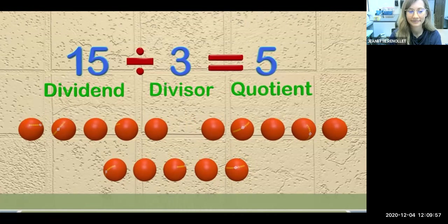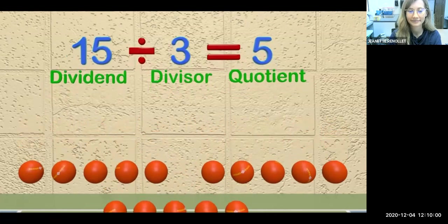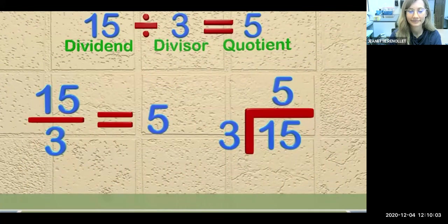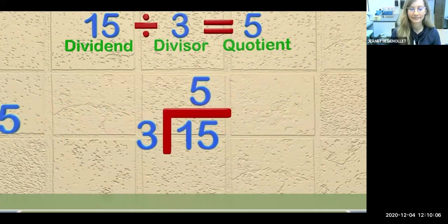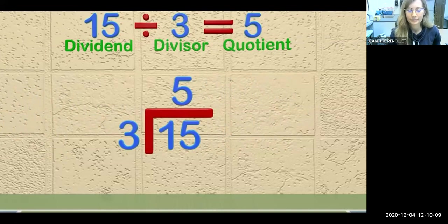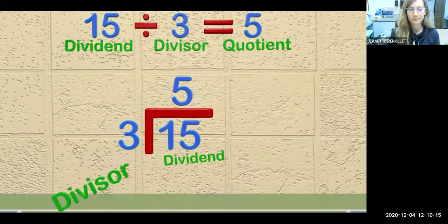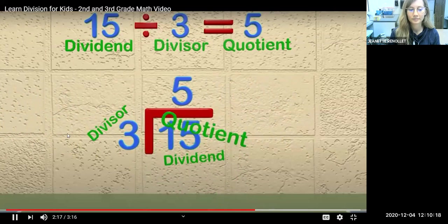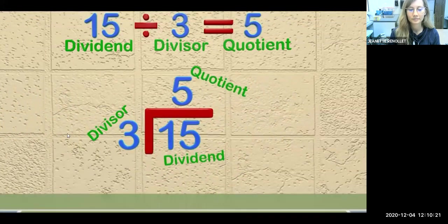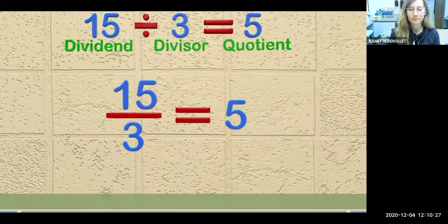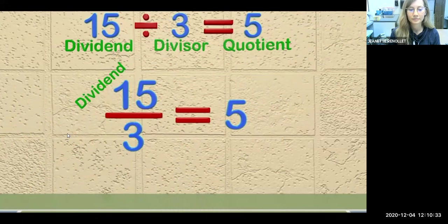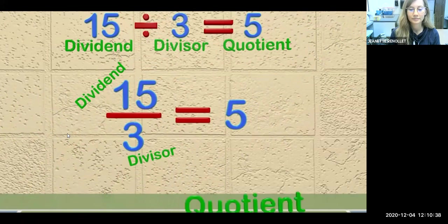There are several ways to write a division problem. Let's take a quick look. Here we have three ways to write a division problem. This division problem is exactly the same as the one above. The 15 is the dividend, and the 5 above the division box is the quotient, also known as the answer. Let's look at one last way to show a division problem. Again, this problem is the same as the one above. The 15 is the dividend, and is on top of a division bar. The 3 is the divisor in the problem, and the number 5 is the quotient.